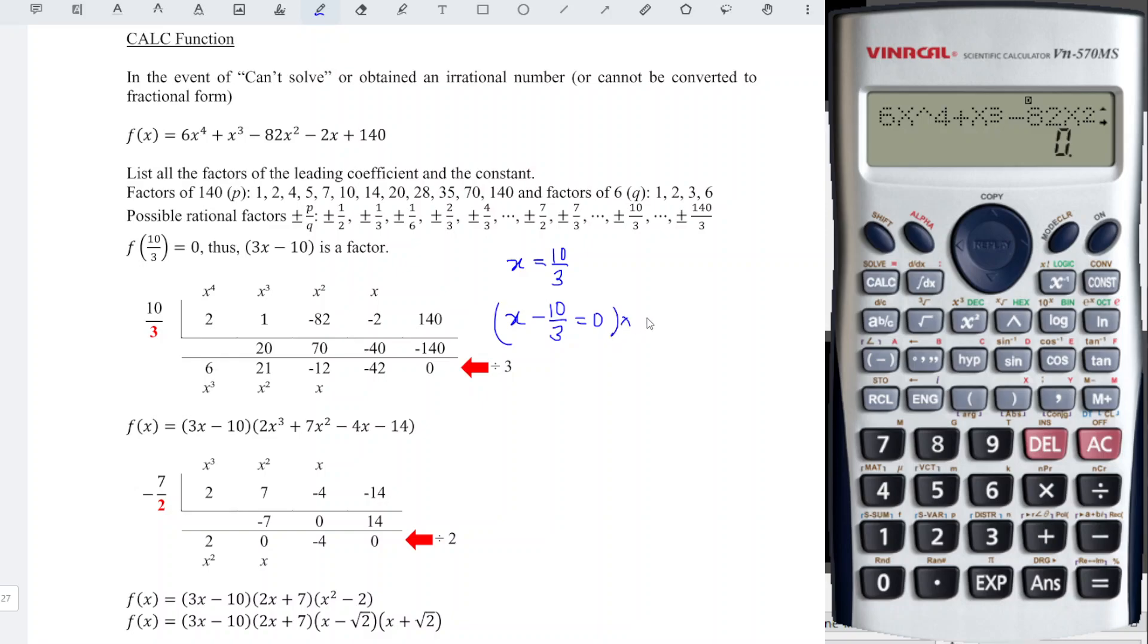We need to multiply the entire equation by 3 in order to make sure that we obtain only integers but not fractional numbers. So we have 3x - 10 = 0, which means that 3x - 10 is a factor.